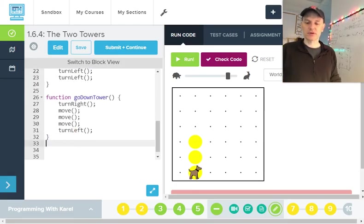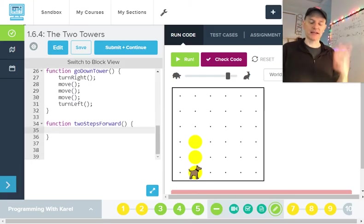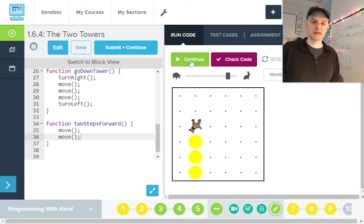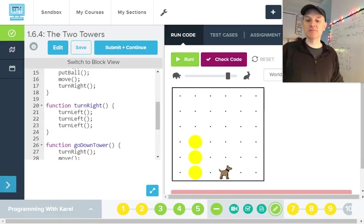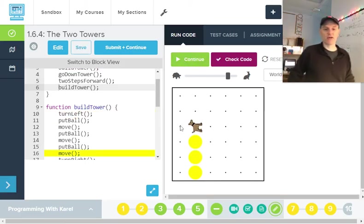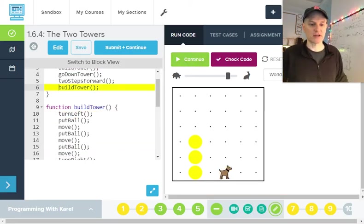Two steps forward. So two steps forward. This could be something like move, move, right? Let's run this to test it. Now two steps forward. Good. And I'm ready to build, I'm in position to build the tower again, right? And hopefully now that this second tower ends where Carol is supposed to end according to the assignment.